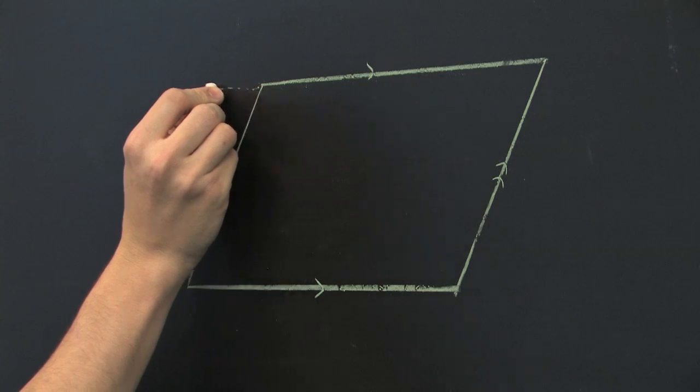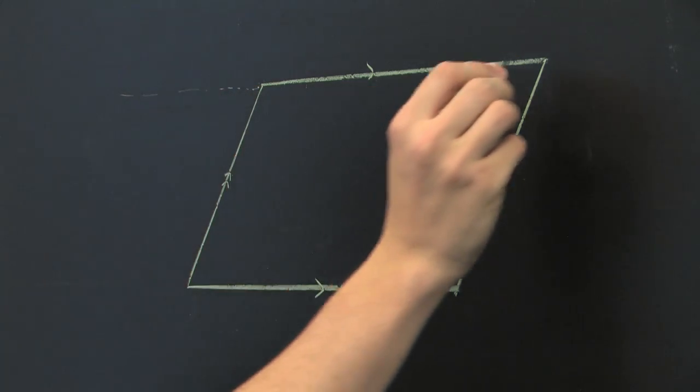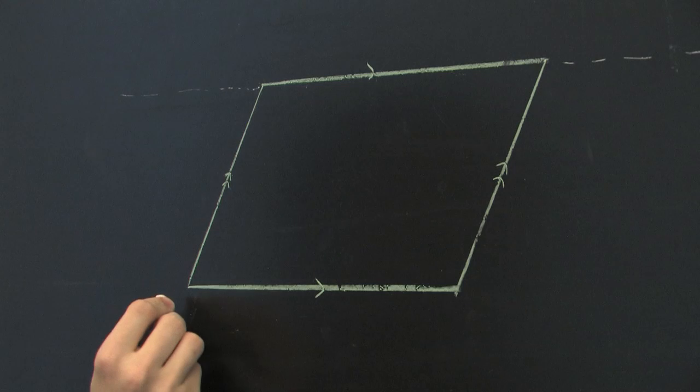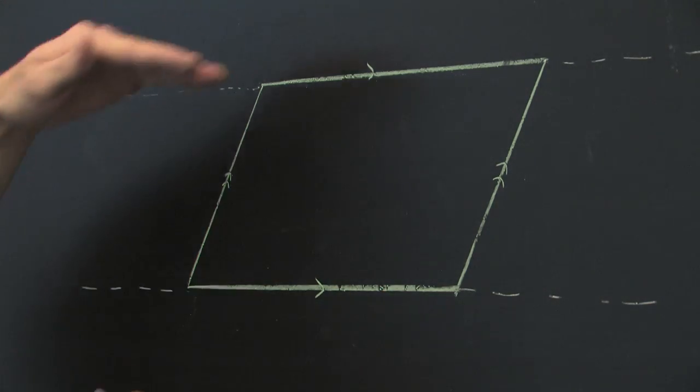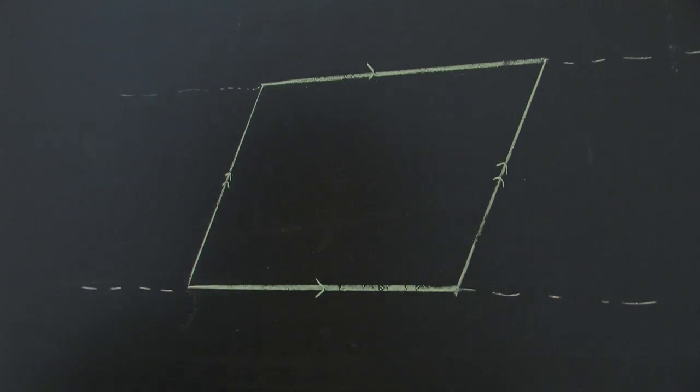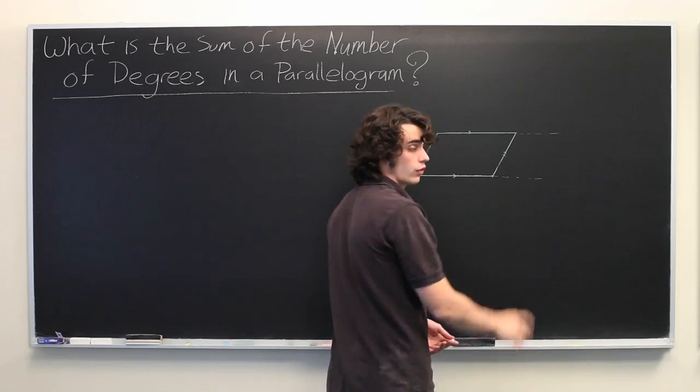Let's consider extending this line outwards and pretend for the moment that it goes on to infinity in both directions. And we'll do the same for the bottom. Since these two are parallel lines, we can think of each of these as transversals.